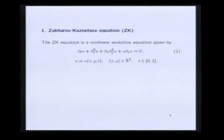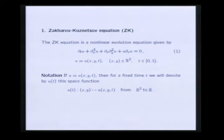In this talk, I will consider the Zakharov-Kuznetsov equation. This is a nonlinear evolution equation which is a bidimensional generalization of the Korteweg-de Vries equation. This equation appears in mathematical models to describe the propagation of nonlinear ion acoustic waves in a magnetized plasma. The unknown function in the equation is a function of the space variables X and Y and of the time variable T.